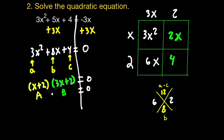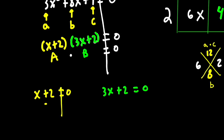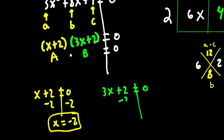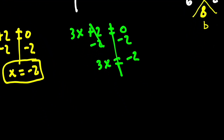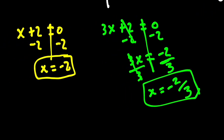Now that I've factored, I can use the zero product property — I have the product of two things equal to 0 — so x plus 2 equals 0 and 3x plus 2 equals 0. I have two linear equations to solve. For the first: subtracting 2 from both sides gives x equals negative 2. For the second: subtracting 2 from both sides gives 3x equals negative 2, then dividing by 3 gives x equals negative 2 over 3. Those are my two solutions.